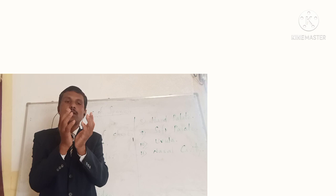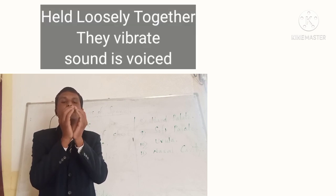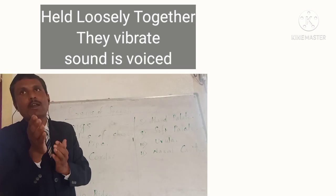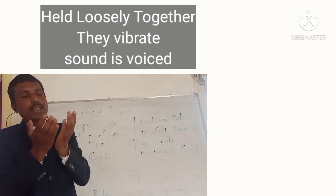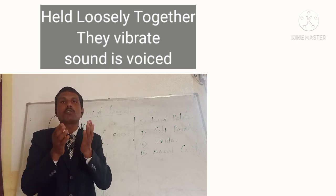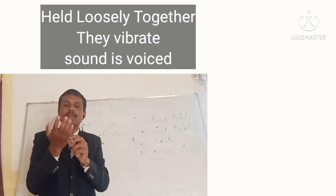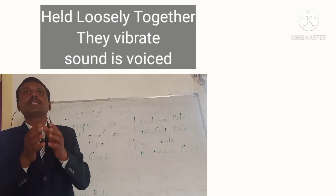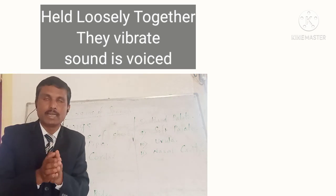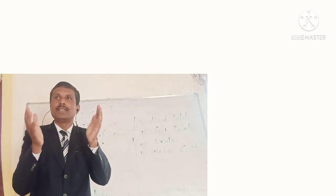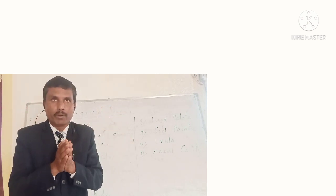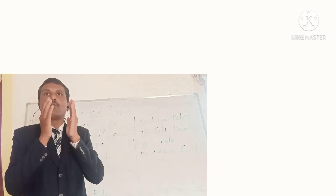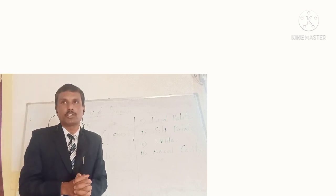In the second position, vocal cords are held loosely together. When they are held loosely together, there is a narrow gap between them and air escapes through this narrow gap. As air escapes through this narrow gap, vocal cords are set into vibration. As vocal cords vibrate, we hear a kind of sound, and we call those sounds voiced sounds. So when vocal cords are held wide apart, they do not vibrate and sounds are called voiceless; when held loosely together, they vibrate and sounds are called voiced.